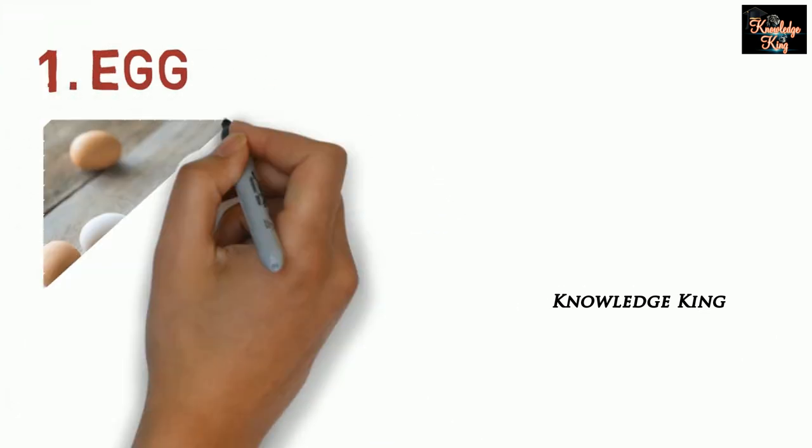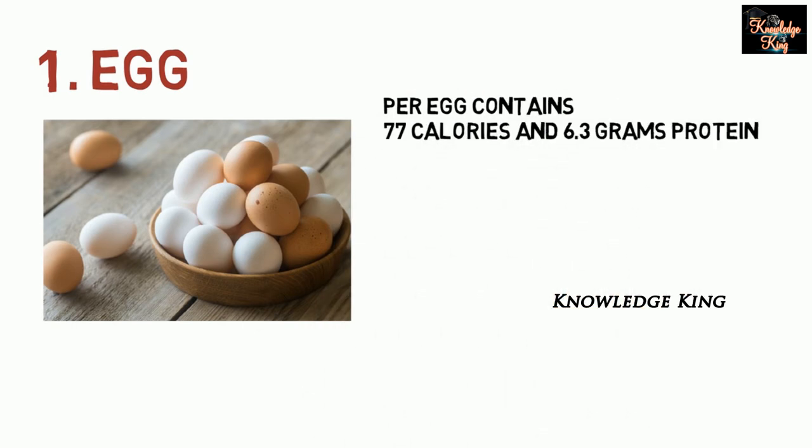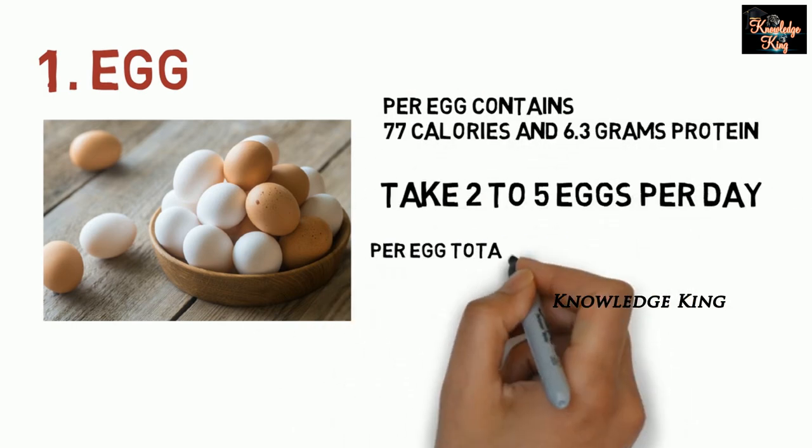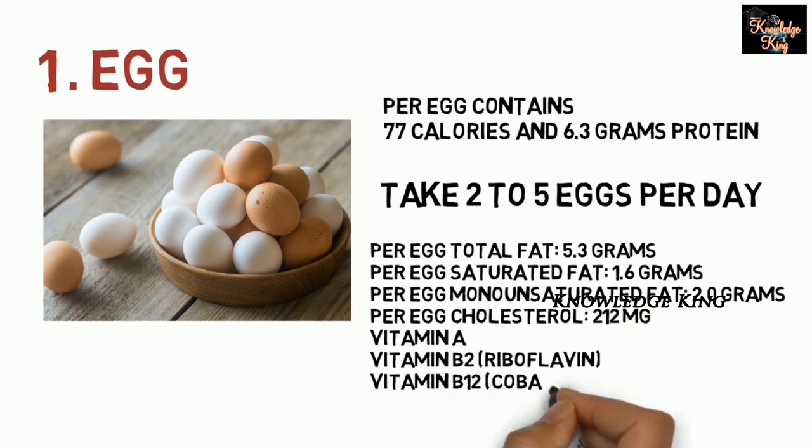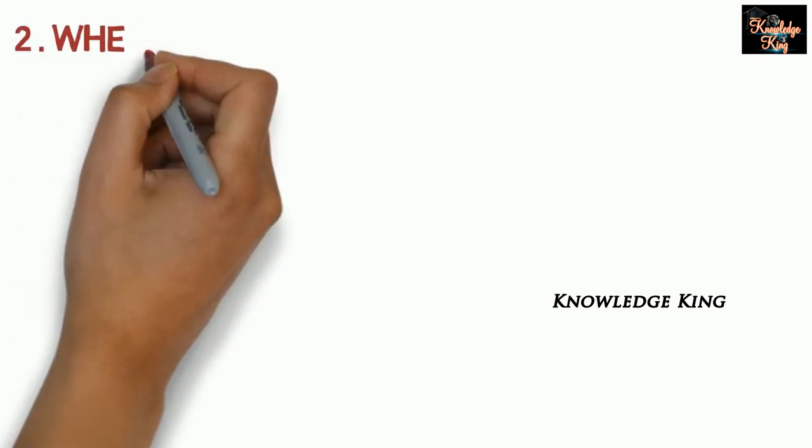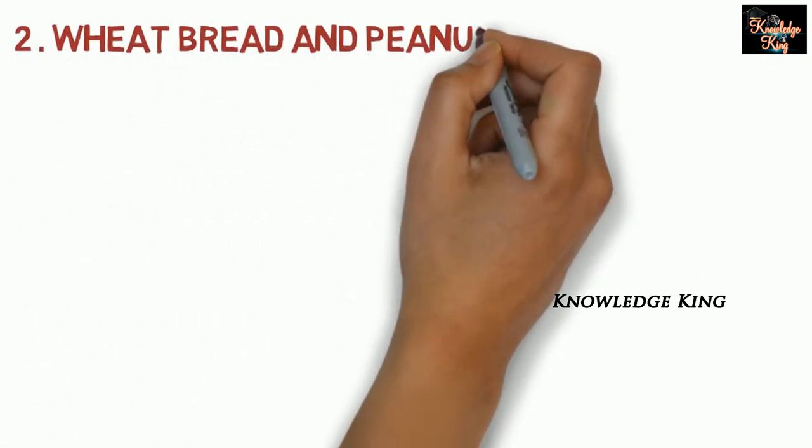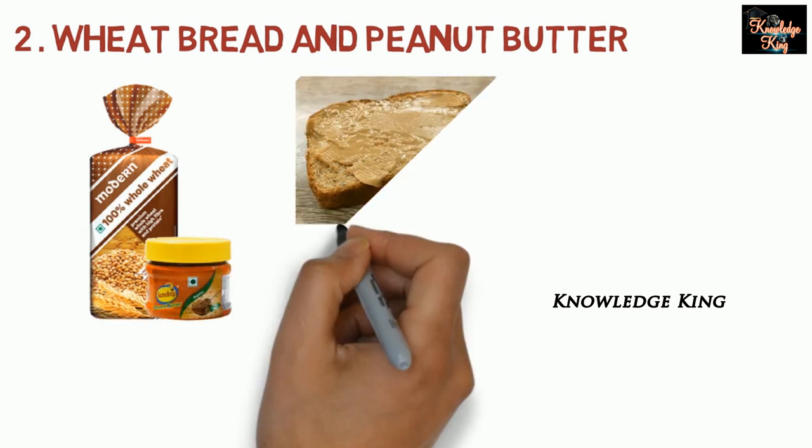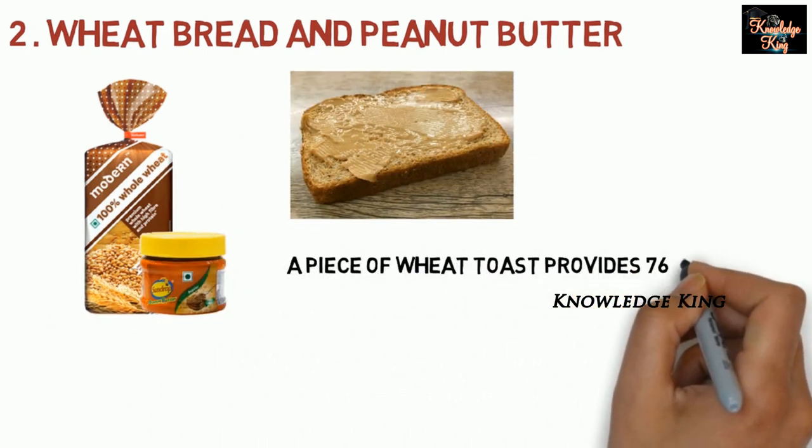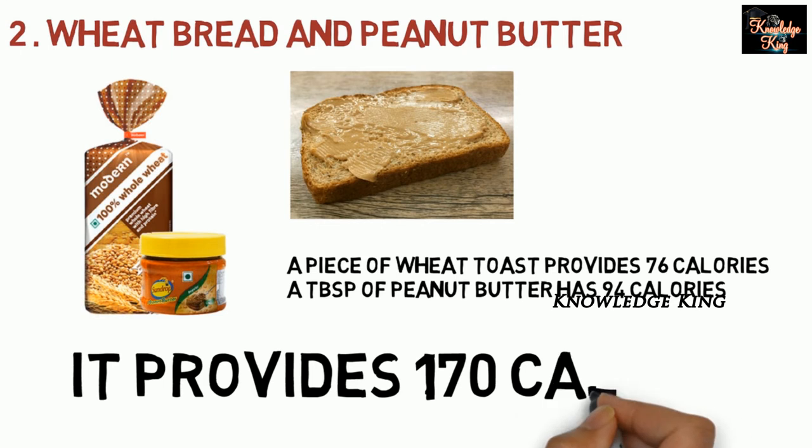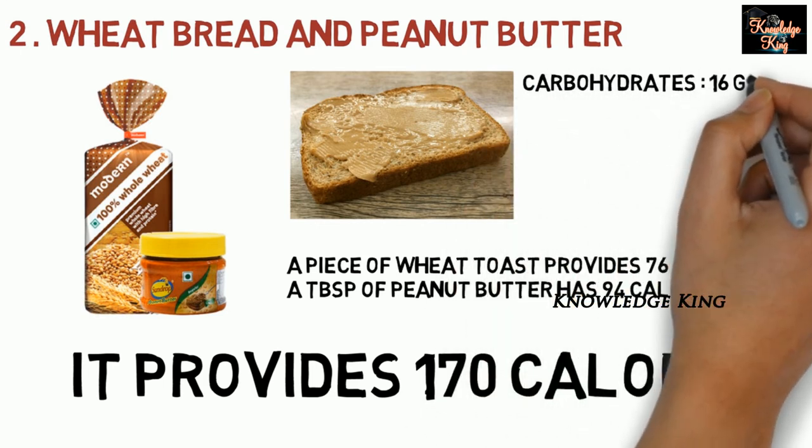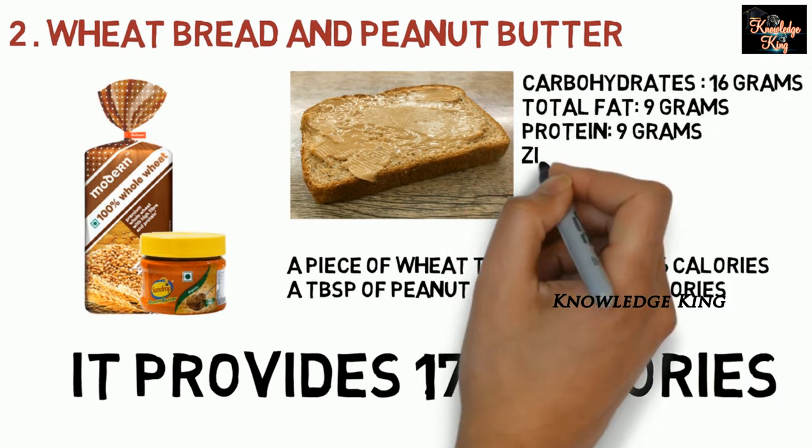Eggs. There are 77 calories and 6.3 grams of protein. You can eat a lot of eggs. Wheat bread and peanut butter. One piece of wheat bread is 76 calories. One tablespoon of peanut butter is 94 calories. If you combine one piece with one tablespoon, you will gain 170 calories.